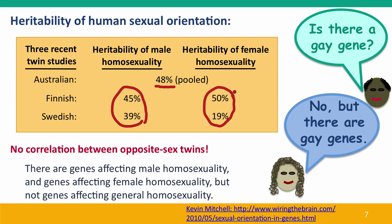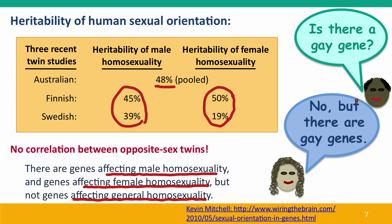Interestingly, there was no correlation between twins of the opposite sex. So if the male twin in a brother-sister non-identical twin pair was homosexual, that didn't in any way predict that the female twin was more likely to be homosexual too. This tells us that there are genes affecting male homosexuality and there are genes affecting female homosexuality, but there aren't any genes affecting general homosexuality. So we can say there's not a gay gene, but there are gay genes — there are genes that influence human sexual orientation.